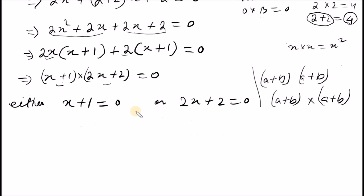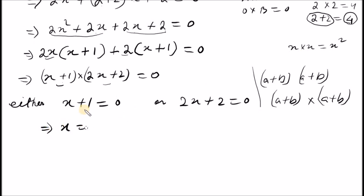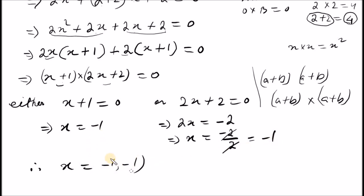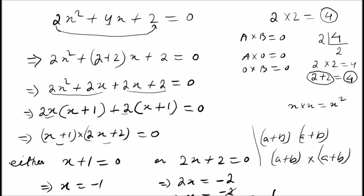From x plus 1 equals to zero, x equals to minus 1. From 2x plus 2 equals to zero, 2x equals to minus 2, so x equals to minus 2 divided by 2, which equals minus 1. Therefore x equals to minus 1.